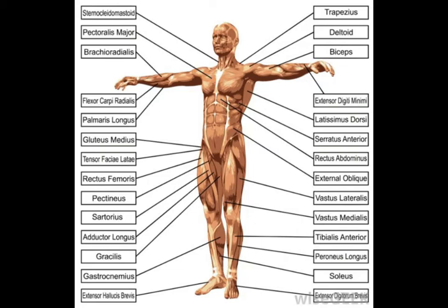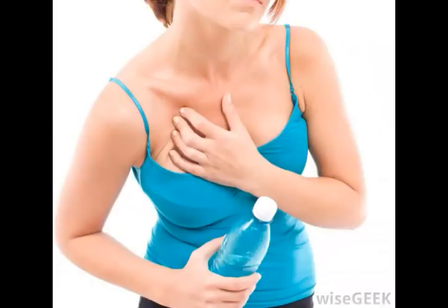Coracoid impingement syndrome is an unusual condition where the coracoid process sticks out so far that it rubs against the lesser tuberosity, the upper part of the arm where it fits into the shoulder joint. A person with this syndrome will most likely feel pain and tenderness underneath the collarbone near the shoulder joint, and may hear a clicking noise when they move the shoulder forward. This syndrome is usually only diagnosed after other more common causes of shoulder pain are ruled out, and it typically can be cured by surgically removing the tip of the process.